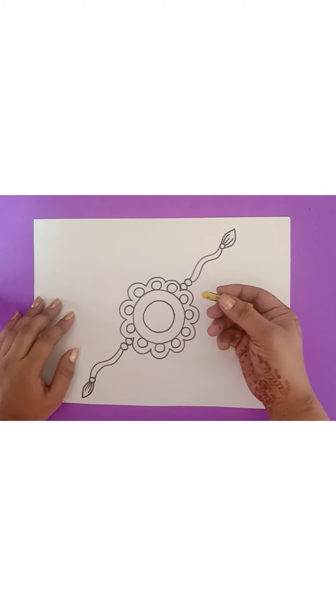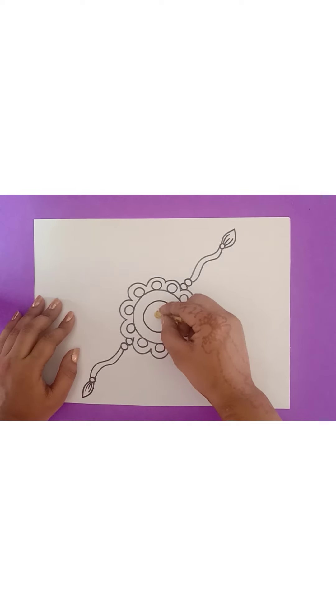Now, we will do the coloring. Firstly, I have this yellow color. Do yellow coloring here.